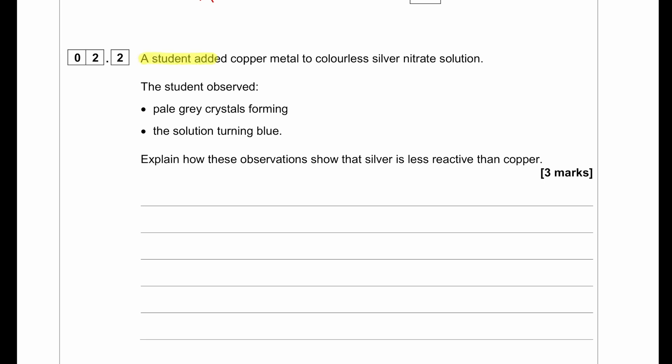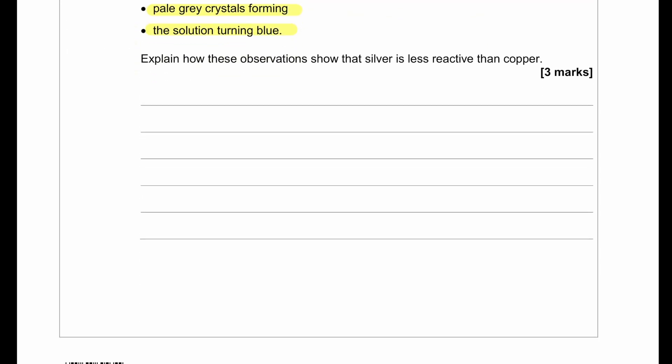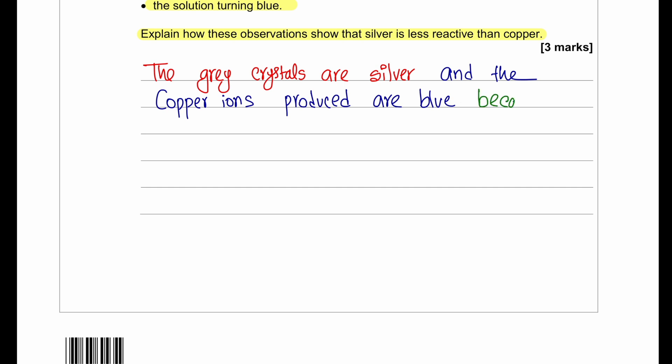A student added copper metal to colorless silver nitrate solution. The student observed pink crystals forming and the solution turning blue. Explain how these observations show that silver is less reactive than copper. Here we can see that a displacement reaction is occurring. The answer can be written as: the grey crystals are silver, copper ions are produced which are blue. The copper displaces the silver ions and enters the solution as copper ions.